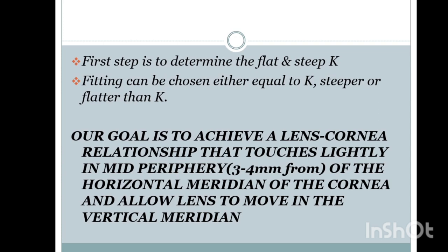Our goal is to achieve a lens-cornea relationship that touches lightly in the mid-periphery. The mid-periphery should touch across 3 to 4 mm of the horizontal meridian of the cornea and allow the lens to move in the vertical meridian. There should be a very light touch in the horizontal meridian over a 3 to 4 mm area, and with each blink the lens should move vertically and rotate.